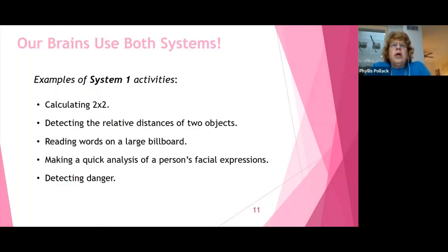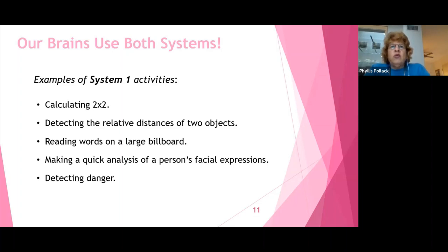Examples of system one would be calculating two by two, detecting the relative distance of two objects, reading words on a billboard, detecting danger — which is the fight or flight response that is very automatic in all of us.